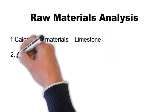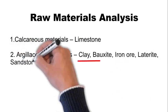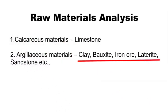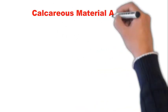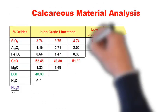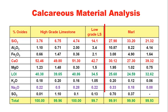The major raw material for manufacturing of Portland cement is calcareous material, that is limestone, and argillaceous material, which is mainly clay-based material. If clay is not available, bauxite, iron ore, laterite, or sandstone are used. To decide the right proportion of these raw materials, first we need to do the chemical analysis. In this table, the chemical analysis of three types of limestone — high grade, low grade, and marl — has been highlighted.